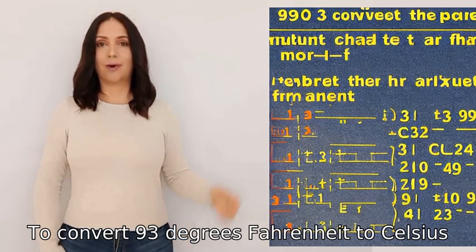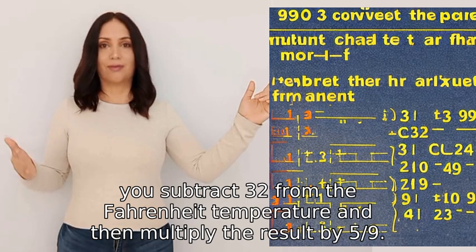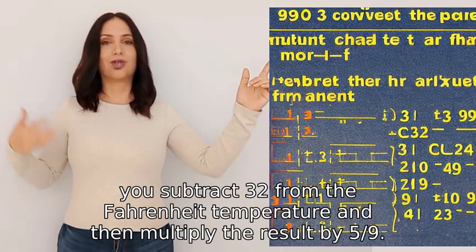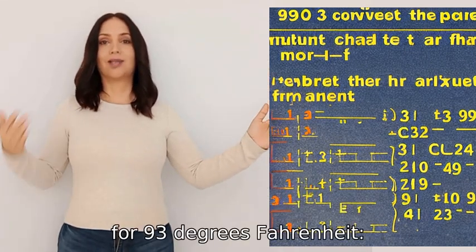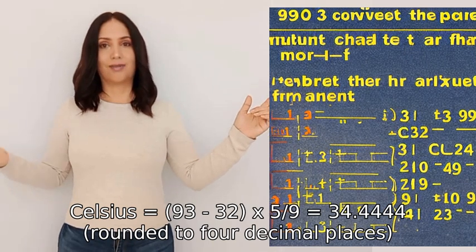To convert 93 degrees Fahrenheit to Celsius, you subtract 32 from the Fahrenheit temperature and then multiply the result by 5/9. So for 93 degrees Fahrenheit, Celsius equals (93 - 32) × 5/9.